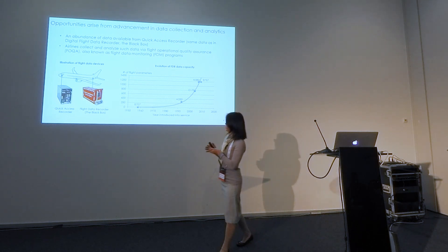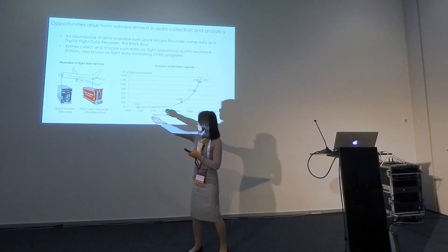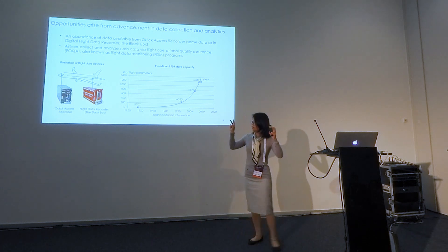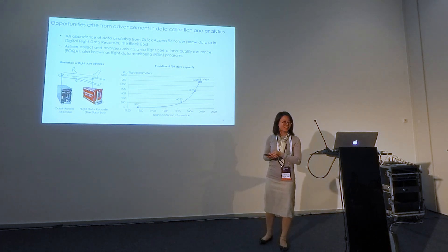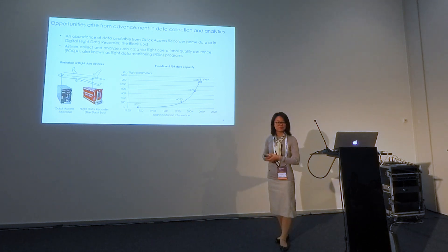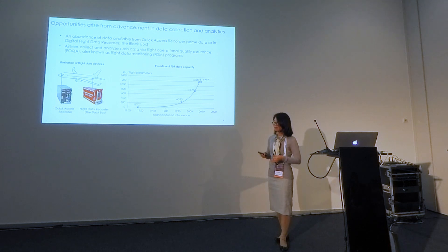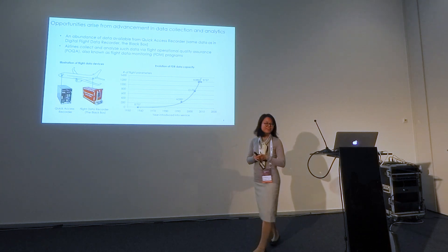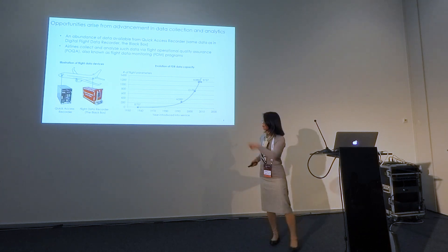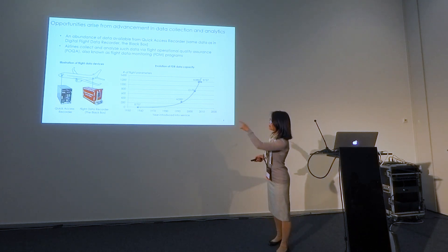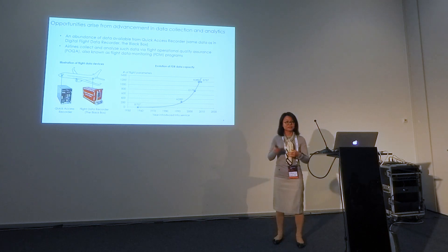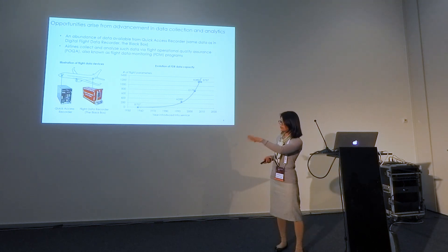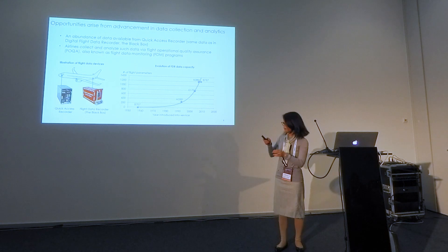Normally what we use is actually the red-colored — well, actually black — quick access recorder, not the orange flight data recorder which is the true black box. From airlines, it's very easy to download data from the quick access recorder.